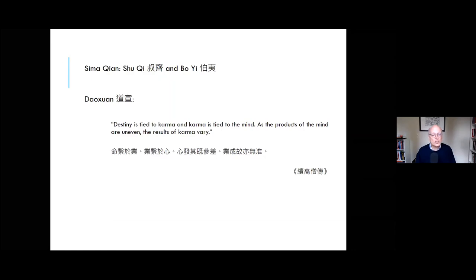He tells us that what the Confucians term destiny, we Buddhists call karma. Destiny is tied to karma, and karma is tied to the mind. As the products of the mind are uneven, the results of karma vary. In other words, there is an intelligible moral order governing history's course, but it's more complex than men like Sima Qian, ignorant of Buddhism, understood, since reward and punishment are distributed in different degrees depending in part on the intentions of individuals involved. Moreover, reward and punishment are spread out over many lives, and this point is key.